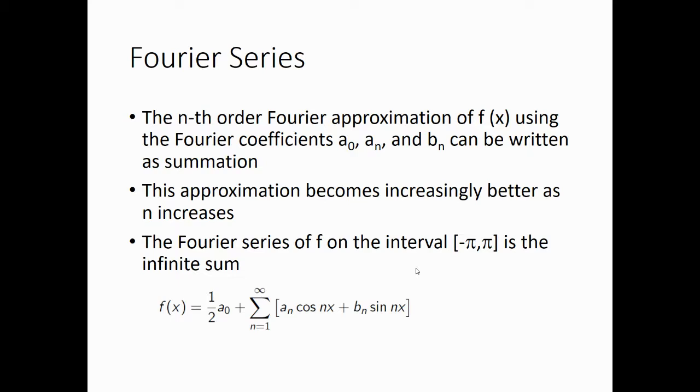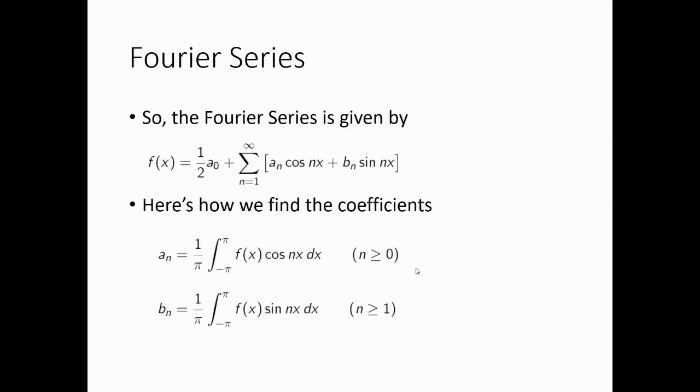So this is a great formula, but there's a question as to how do we get these coefficients a0, an, and bn. So the Fourier series is given by f of x is equal to one half a0 plus the sum of a sub n cosine nx plus b sub n sine nx. And here's how we find the coefficients. The a sub n is one time 1 over pi times the integral from minus pi to pi f of x cosine nx dx. And b is the same thing with sine nx.